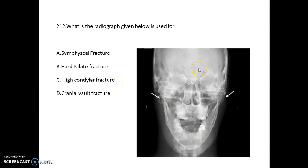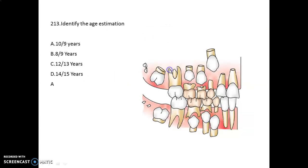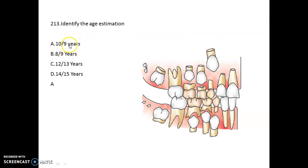Identify the age estimation from the image. When such questions come, we mostly focus on the deciduous tooth or the first permanent molar. Here you have to focus on many things: the canine area, the deciduous teeth, and most importantly the small spicules which represent hard tissue formation for the third molar, which begins around seven to nine years in the maxilla and eight to ten years in the mandible. The age estimation here is nine to ten years.